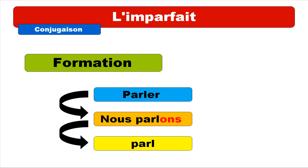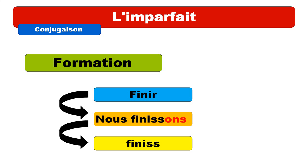Let's take a second example: finir — to end or to finish. At the present form for nous, we get 'nous finissons' — it's a regular verb from the second group. The idea is to take away the '-ons' ending, and then you get 'finiss' — f-i-n-i-s-s. This will be the first part, and then we will combine it with the imparfait endings we'll see a bit later.